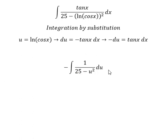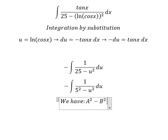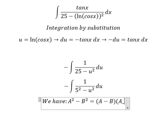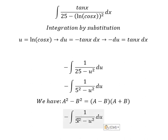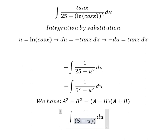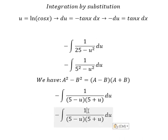So 25 is about five squared, and we have the formula here. This one is about a squared and this one is about b squared, so we need to transform this expression into that form. Next, we need to put the number 10 on the numerator and denominator.